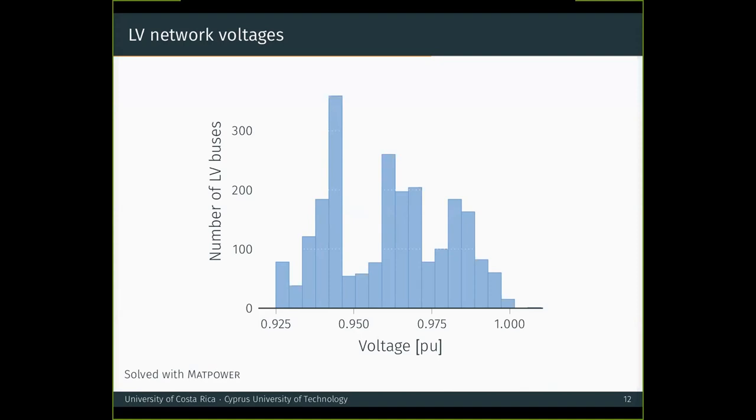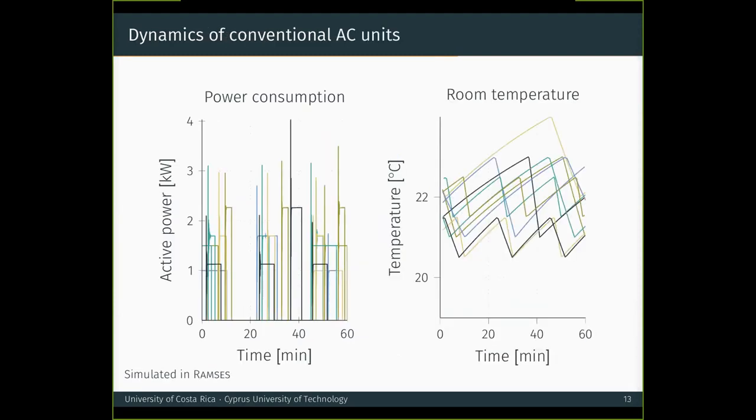We then use this as an initial condition for a dynamic simulation in order to exemplify an application of our platform. These dynamic simulations were carried out in RAMSES, which is a time domain dynamic simulator. And in this program, all DERs and loads were modeled as an initial value problem of differential and algebraic equations. So to illustrate, we show on the left, the active power consumption of air conditioning units. And on the right, the corresponding room temperatures. Since each of these models includes a two-mass model of the thermal subsystem, we obtain independent temperature trajectories. And therefore, this platform could be used to test load control strategies that rely on these individual temperatures.